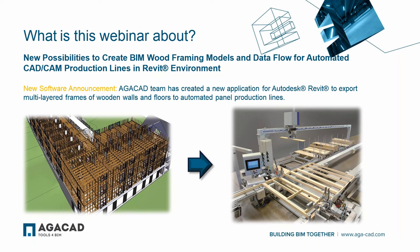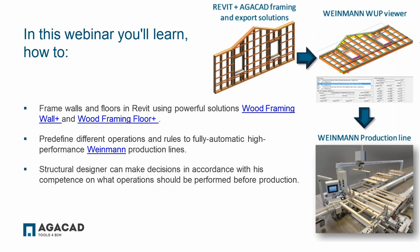We have created a new application with an export from Revit to automated panel production lines. We will start from the beginning, take our architectural model, frame the walls and floors, and then create files used in manufacturing. You will learn how to frame walls and floors in Revit using Wood Framing Wall Plus and Wood Framing Floor Plus, and how to pre-define operations and rules for fully automated performance using the Weinmann production lines.